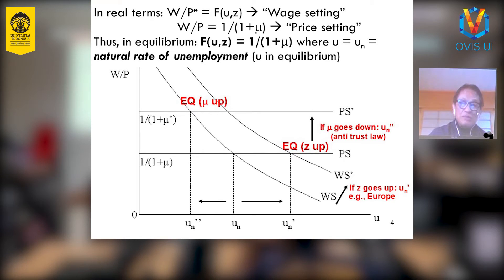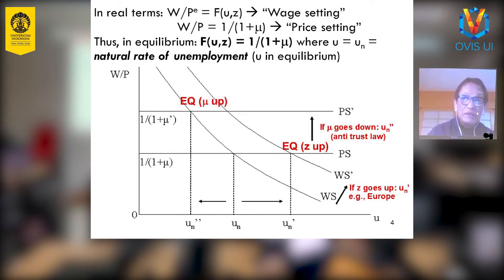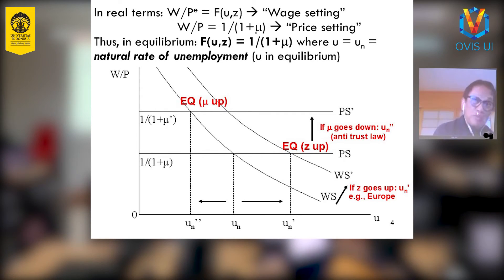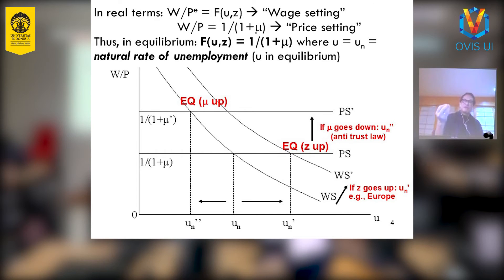Suppose the unemployment rate is already at equilibrium. Remember, in equilibrium the wages are also in equilibrium, meaning wages are at the proper level — not too low and not too high. If you are already at that ideal position and the labor union gets stronger, or the government becomes populist and promises too much for labor when labor's condition is already at good welfare — because it's already in equilibrium — then yes, unemployment goes up.